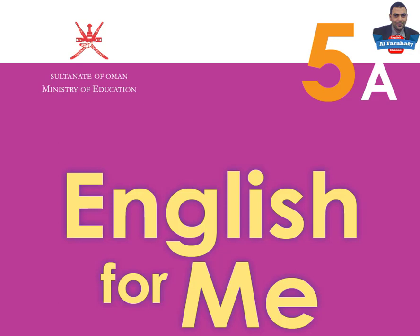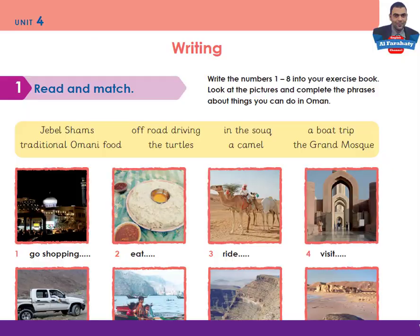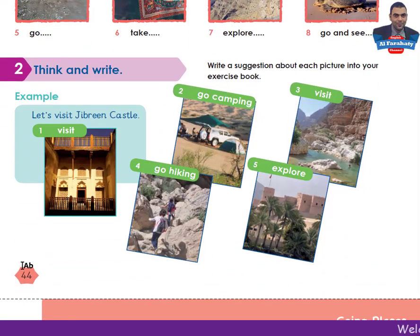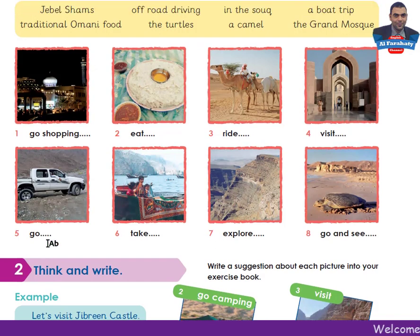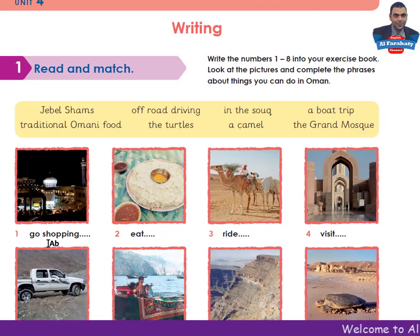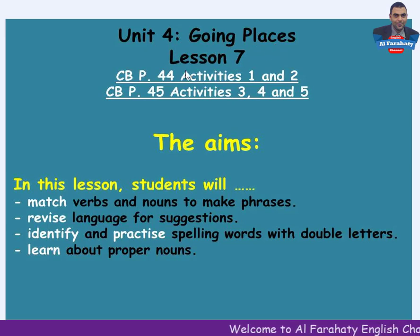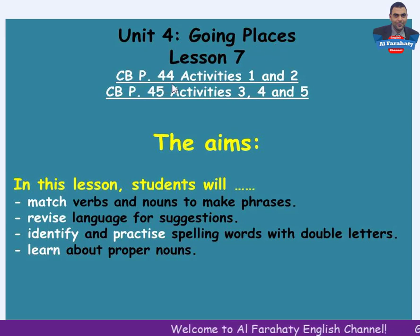Please open your classbook to page 44. What are the aims of this lesson? Let's check. Unit 4, Going Places, Lesson 7, classbook page 44.